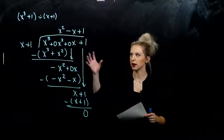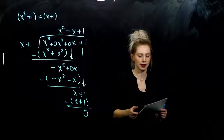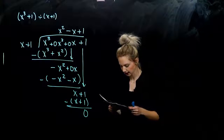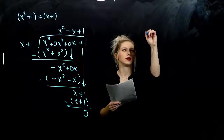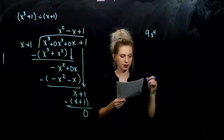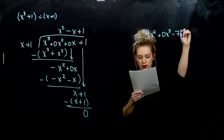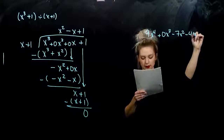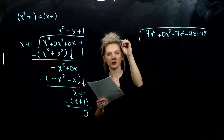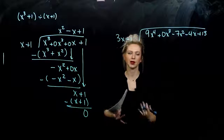We could check: if I multiply the quotient up top by my divisor, do I get the thing on the inside? And we do. So in the next example, what hole do we need to plug in our polynomial here? I have the fourth power, I don't have a third power, so we need to plug that hole. Negative seven x squared, negative four x plus thirteen — and we want to divide that by three x minus one. Once we plug the hole, it behaves as normal.